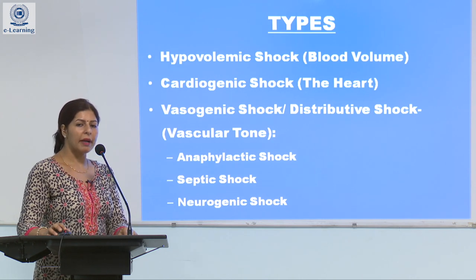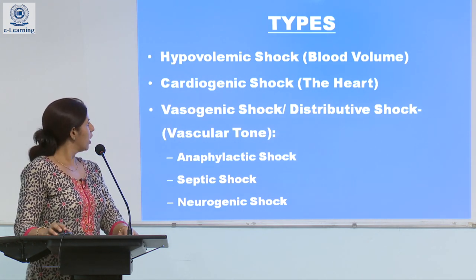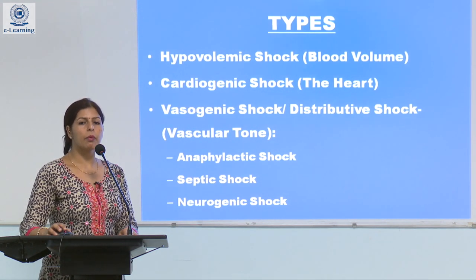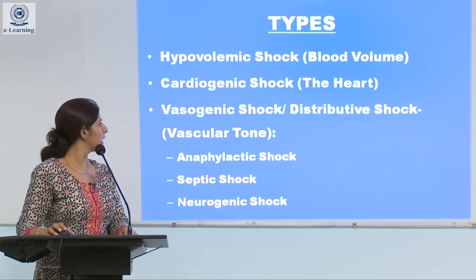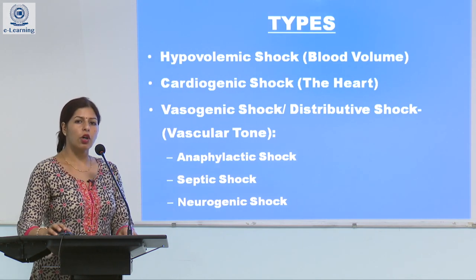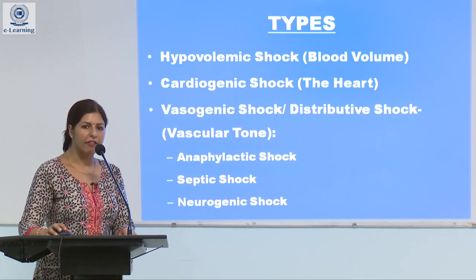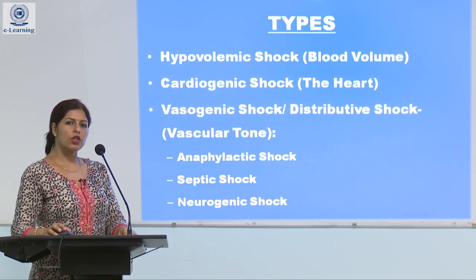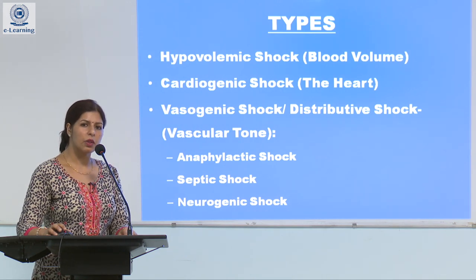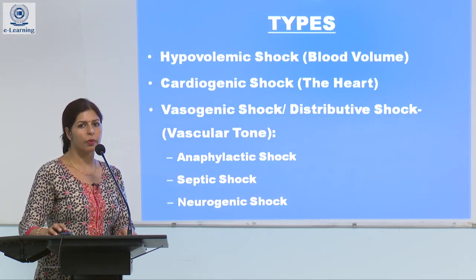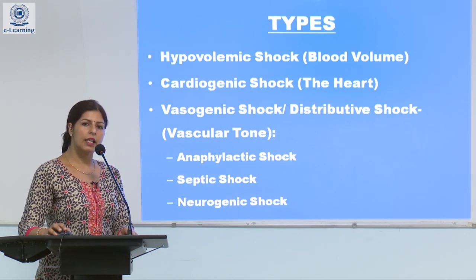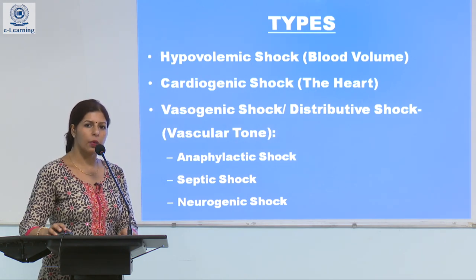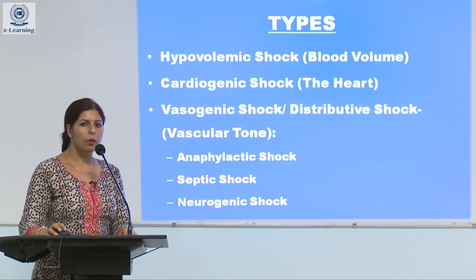Depending upon these three factors, there are three types of shock. First is hypovolemic shock, if there is inadequate blood volume, which may result from fluid shift or fluid loss. Second is cardiogenic shock, if the muscles of the heart are not pumping effectively and efficiently. The third is vasogenic shock or distributive shock, where the sympathetic nervous system or the blood vessels are not able to maintain tone, resulting in vasoconstriction or vasodilation and pooling of the venous blood, causing inadequate cardiac output.